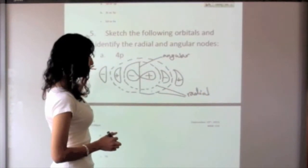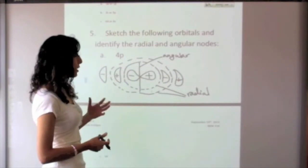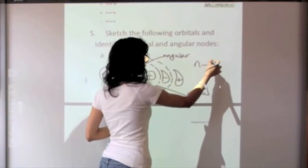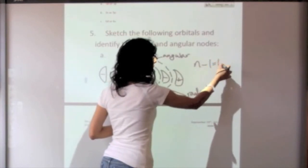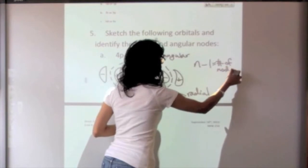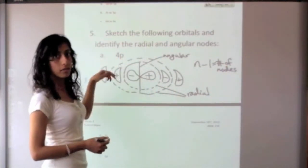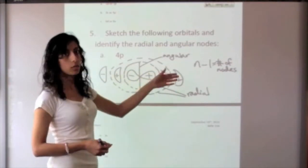Just as a general rule, the number of nodes that an orbital has is equal to n minus 1. So if we have a 4p orbital, n is equal to 4, 4 minus 1, we have to have three nodes.